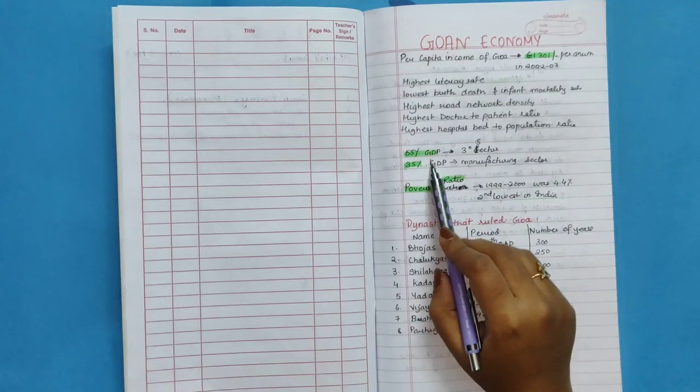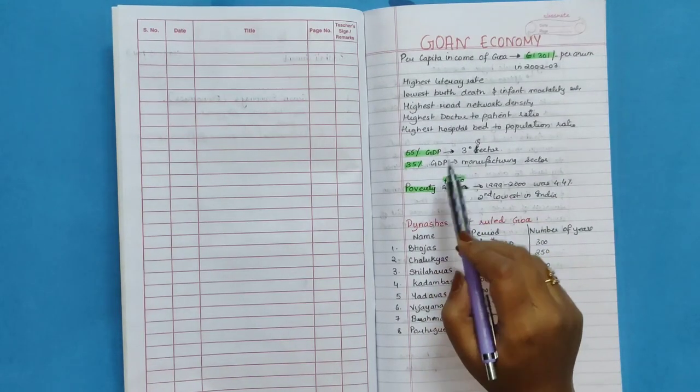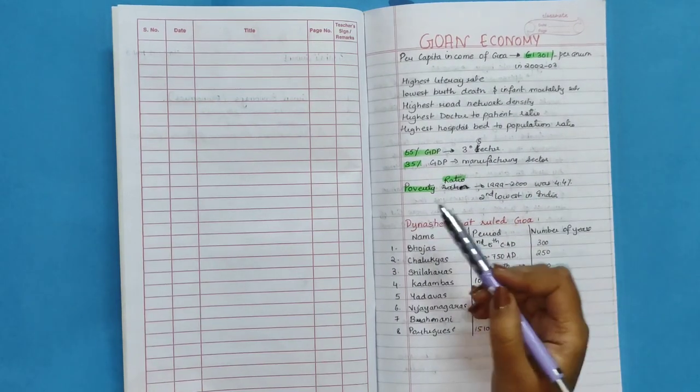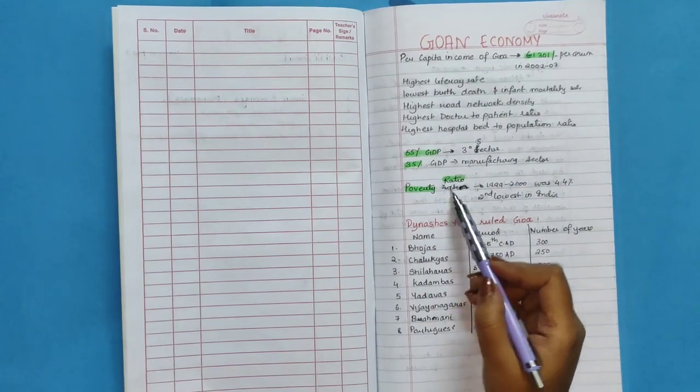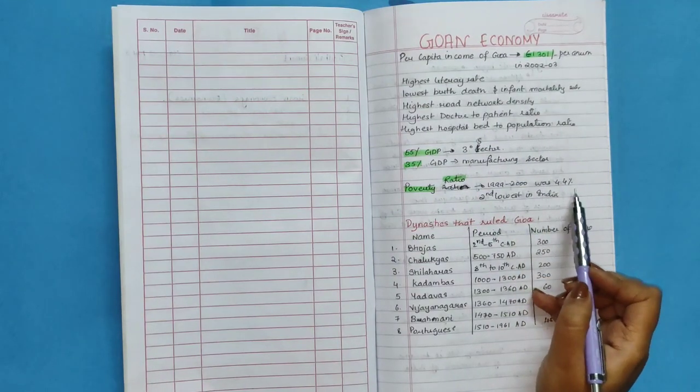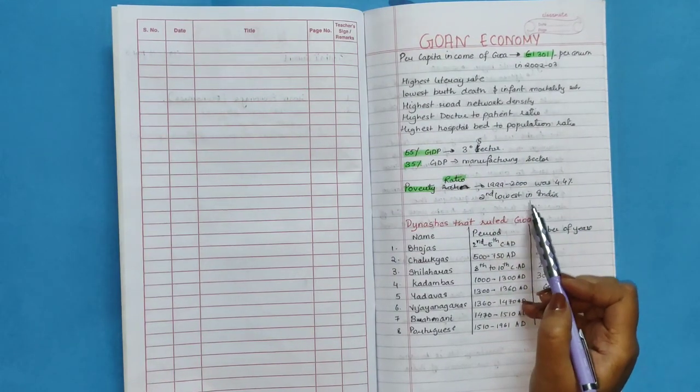55% of GDP comes from tertiary sector and 35% of GDP from manufacturing sector. Poverty ratio in 1999-2000 was 4.4%, which is second lowest in India.